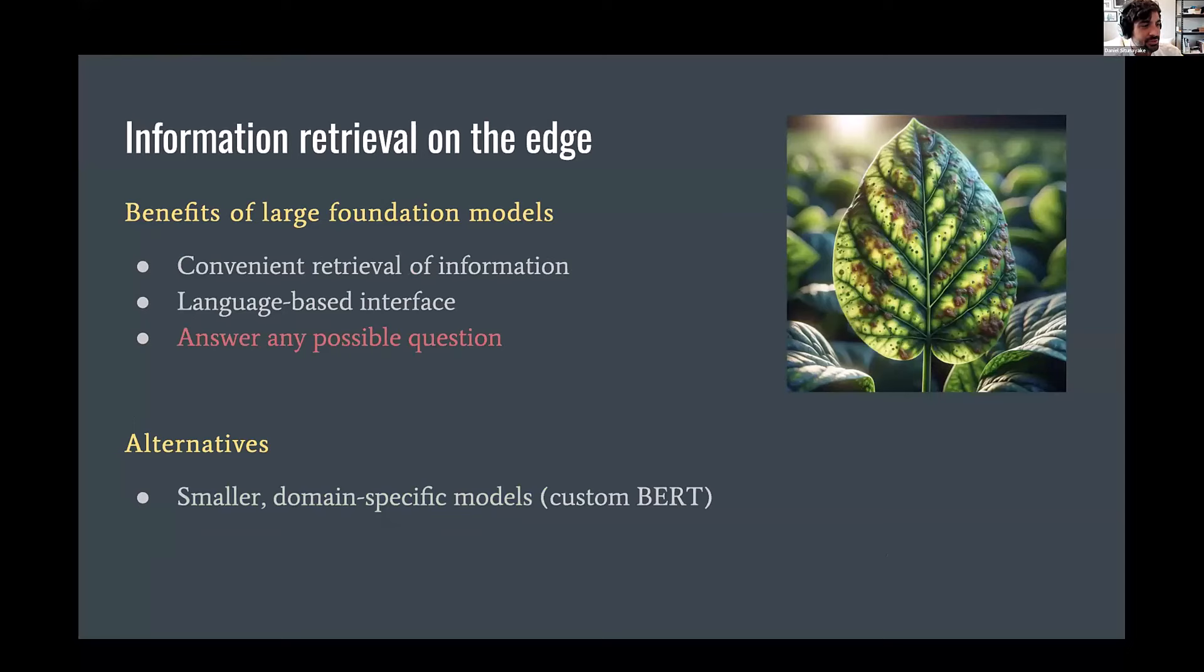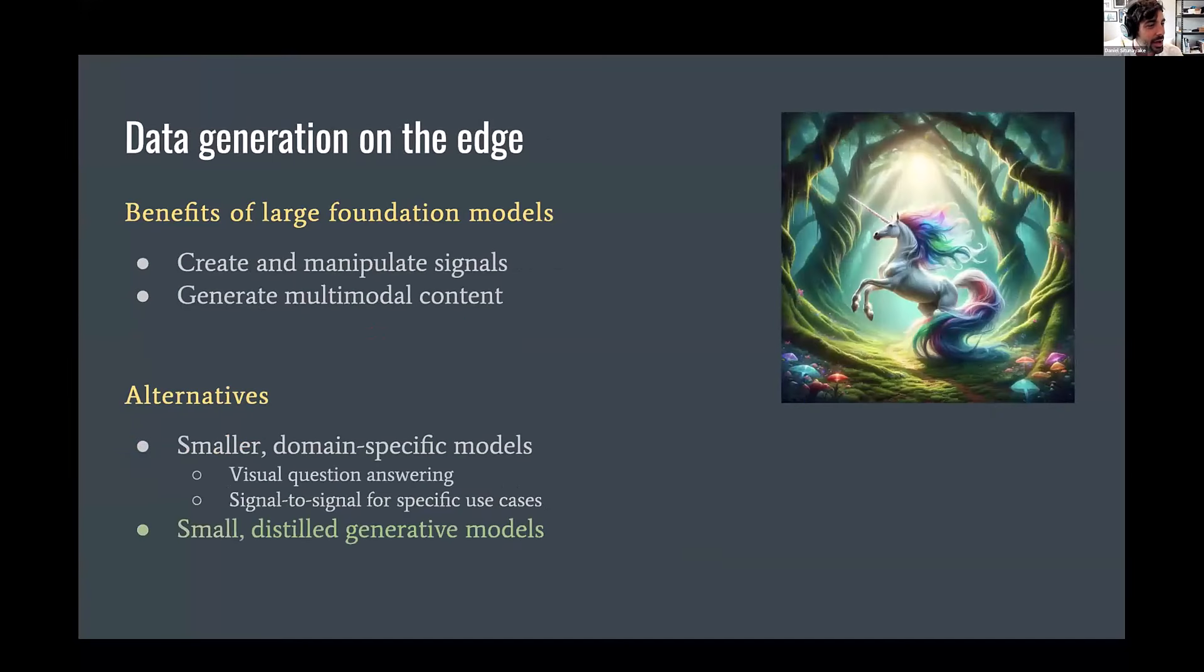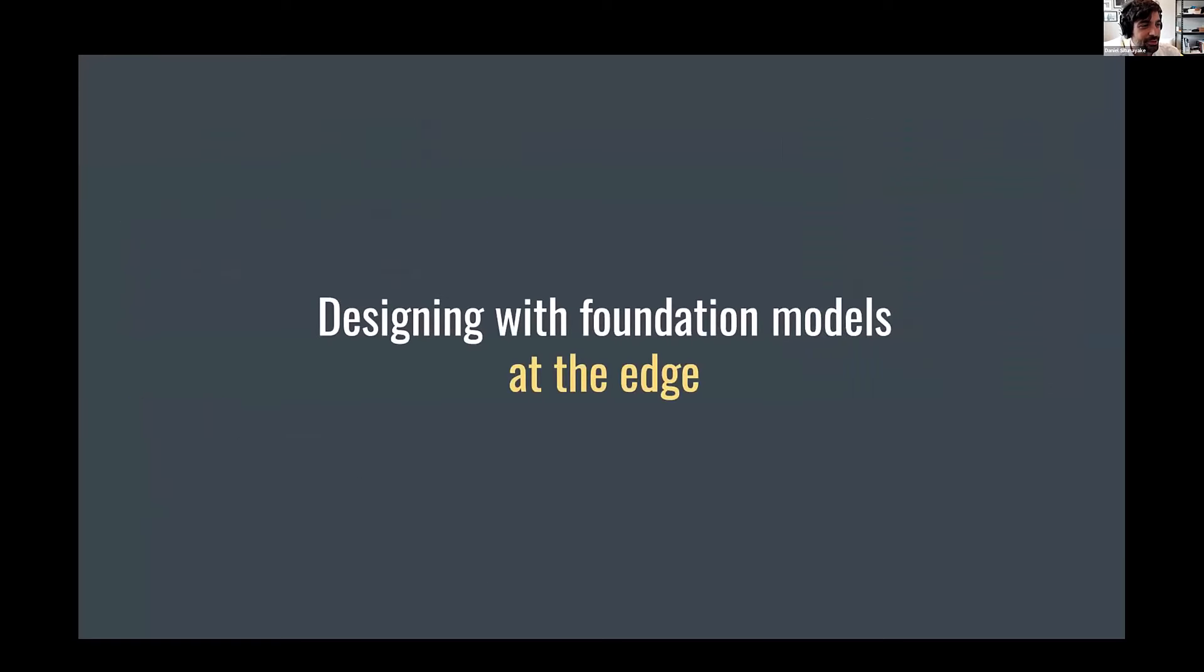And for information retrieval, we also have benefits of, you know, you can conveniently look stuff up, you have a language-based interface. Whether it's easy to get a generative model to give you a reliable answer to questions is still TBD, right? That's still something that we're working on at the big level. But you can do some pretty good stuff with small domain-specific models again here. And with data generation, we've got these large models that can create and manipulate signals and generate all sorts of content. You can definitely train small domain-specific generative models that work well in a constrained environment. It's definitely not something you need big giant models for. This is something that you can do visual question answering on very small model size. For example, you can also do signal generation. So denoising and that type of thing in very small models. And you can also use distillation from a big generative model. So no need to touch the big models there if you don't want to.